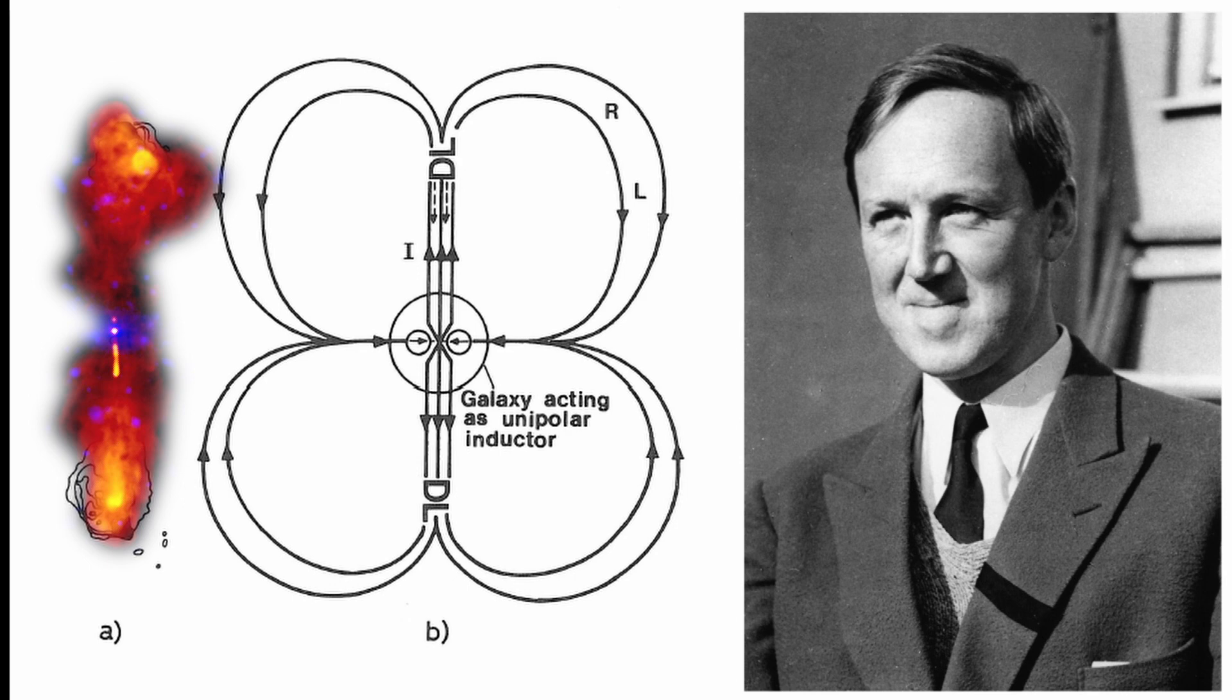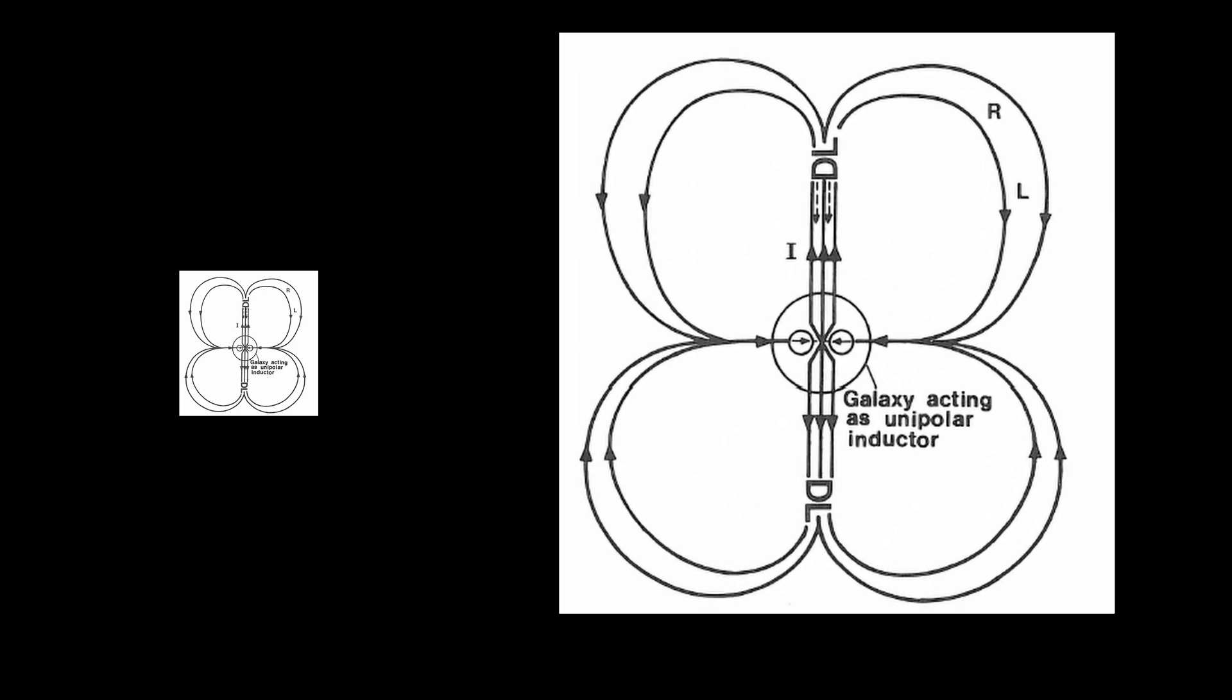This would cause electrons to be accelerated in one direction and ions in the other. The electrons would be scattered more due to their smaller mass and would be responsible for the radio noise in the lobes that we detect. So is it possible that the double layer formed much further out compared to other galaxies?